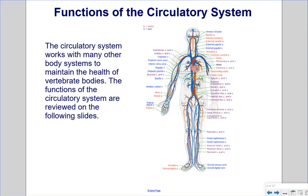The circulatory system works with many other body systems to maintain the health of vertebrate bodies. The diagram depicts many blood vessels, including arteries shown in red and veins shown in blue. These blood vessels are often named after their function or where they are located. For example, the femoral artery runs along the femur, or thigh bone.